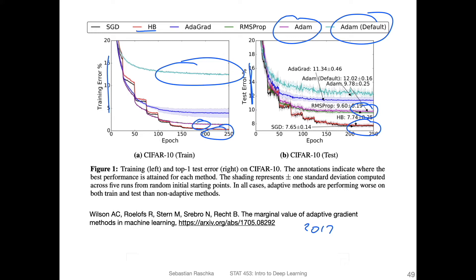They also find the regular SGD performs better than Adam. This is not unique to this single paper. This is something that has been observed by other people as well, that SGD, if it's tuned well, it has usually the best generalization performance.